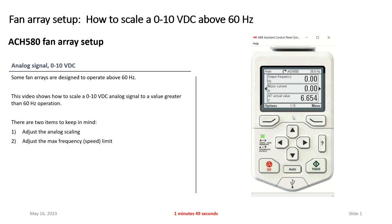Hi, Tim Skell here, ABB HVAC application engineering. Today we're going to take a look at starting up an ACH 580 with a fan array application. This particular fan array application operates at 72 hertz maximum speed, and they want to use a 0 to 10 volt signal to control that 0 to 72 hertz.